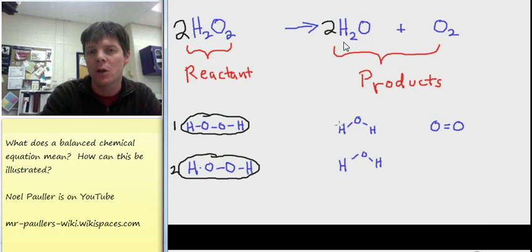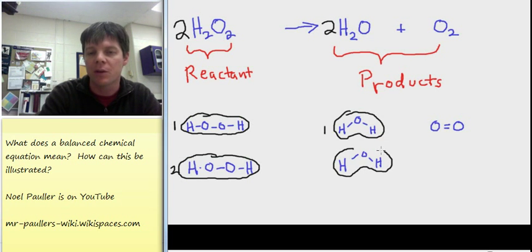And then, once again, we use a coefficient two in front of the water molecule to indicate that there are two water molecules being produced by this process. The final thing that we'll take a look at is the oxygen.